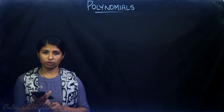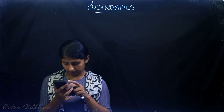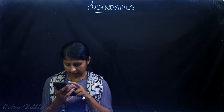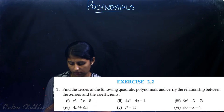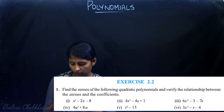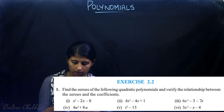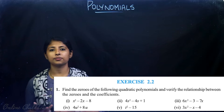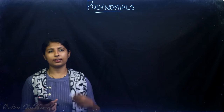Exercise 2.2, Question Number 1, Page Number 33. Find the zeros of the following quadratic polynomial and verify the relation between the zeros and the coefficients. In all these questions, we are asked to find the zeros and then verify the relation.